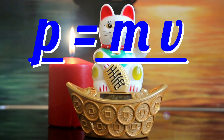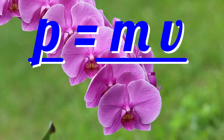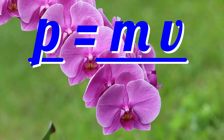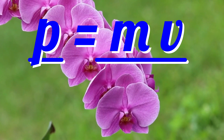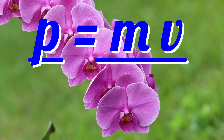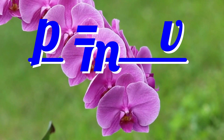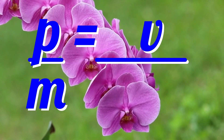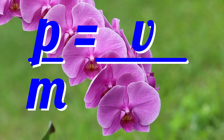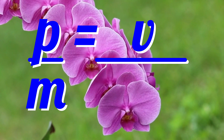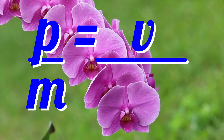p equals mv. To make velocity the subject of the equation, if you know the momentum and the mass, divide through by mass. That is, move the m under the p. p over m equals v. Momentum divided by mass equals velocity.